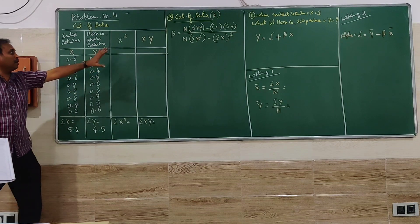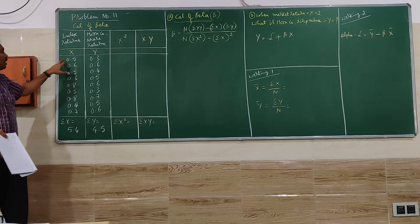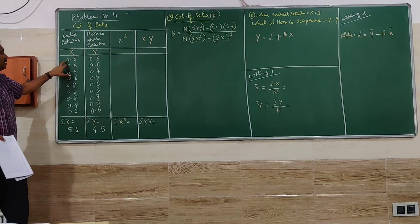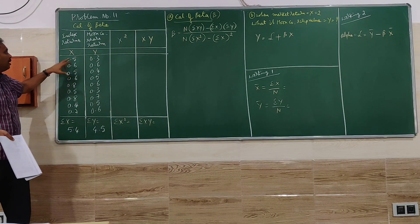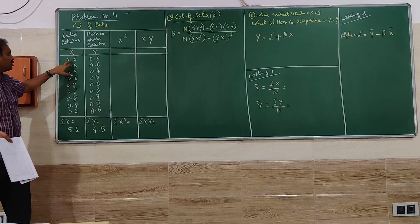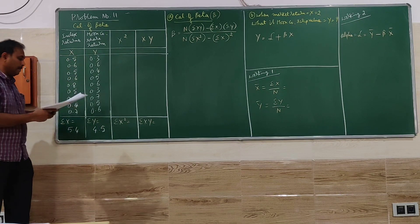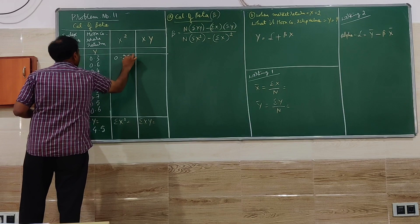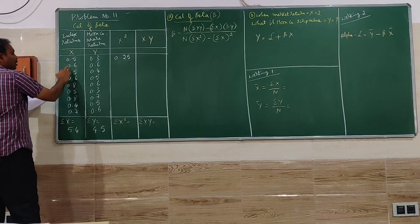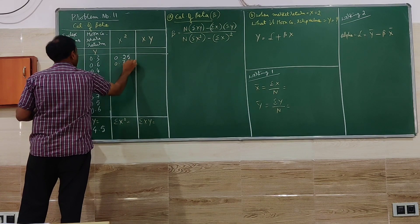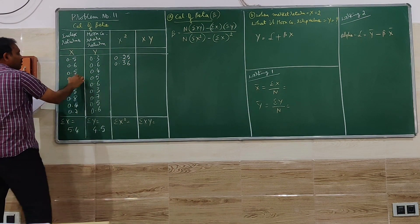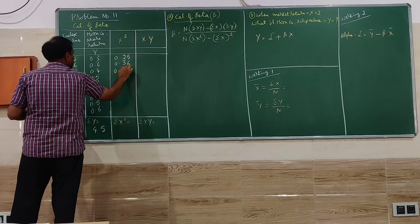Now I have to go for calculation of X square. Whatever the value given here in the X value, we have to multiply into the same number or the square, one and the same. 0.5 into 0.5 is 0.25. Similarly 0.6 into 0.6, again 0.5 square.